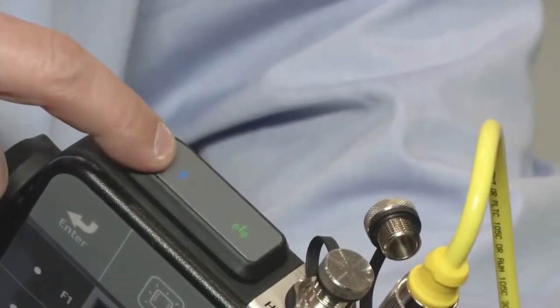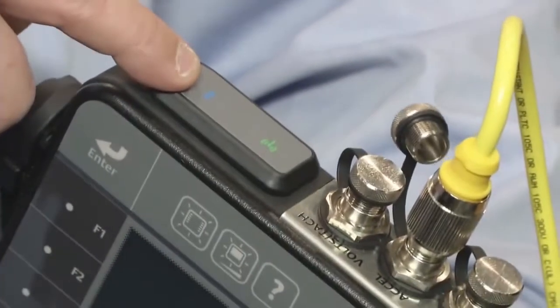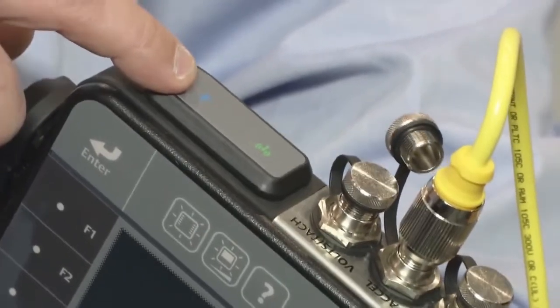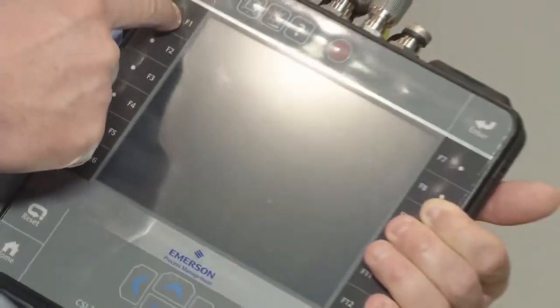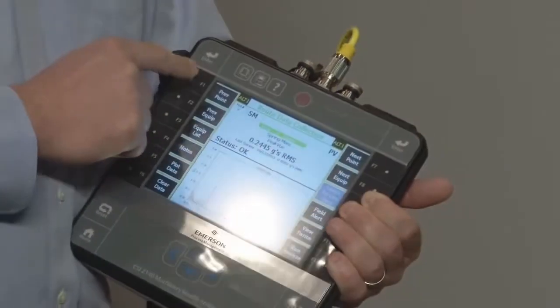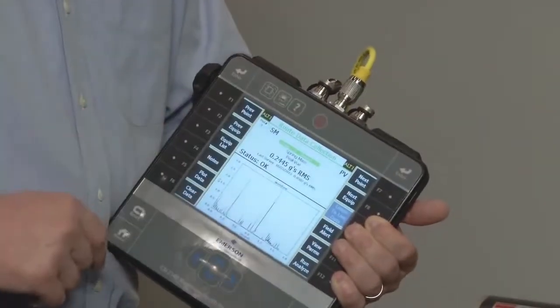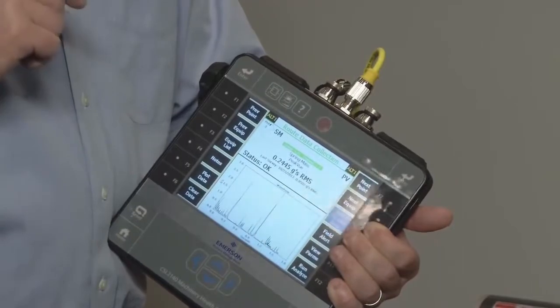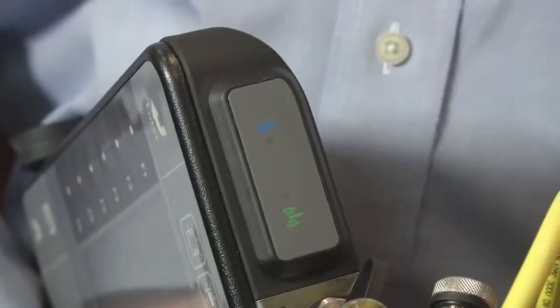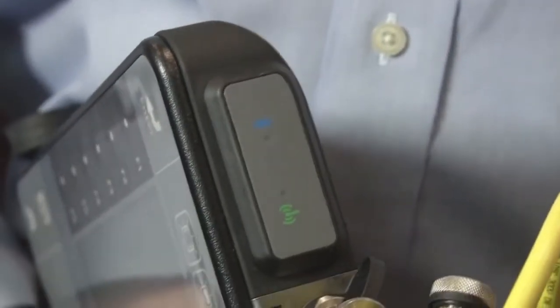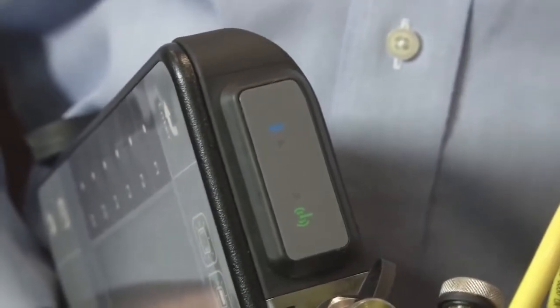The CSI 2140 also has Bluetooth communications for accessories such as Bluetooth wireless headphones. So while you're collecting the data you can certainly see the spectrum and waveform on the screen to indicate where the energy is coming from and the vibrations coming from and listen to it at the same time wirelessly. It adds another dimension to the analysis.